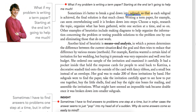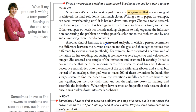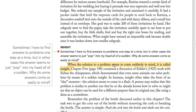One other thing is means-end analysis. Means-end analysis means that a person determines the difference between their current situation and the goal, and then tries to reduce that difference by various means. First, see how far your current situation is from your goal. After that, find ways to remove that distance — how can you get to your goal faster, how can you decrease the distance? That is means-end analysis.